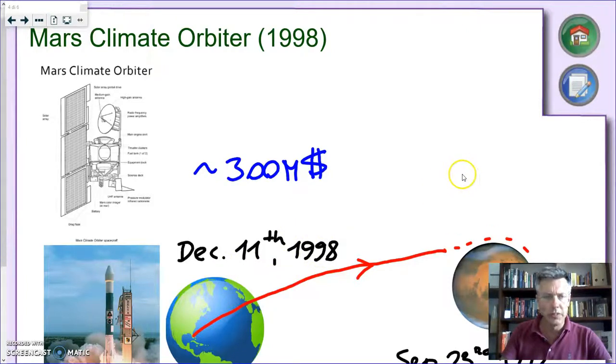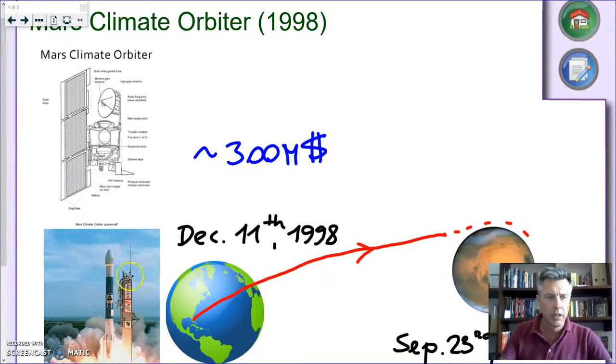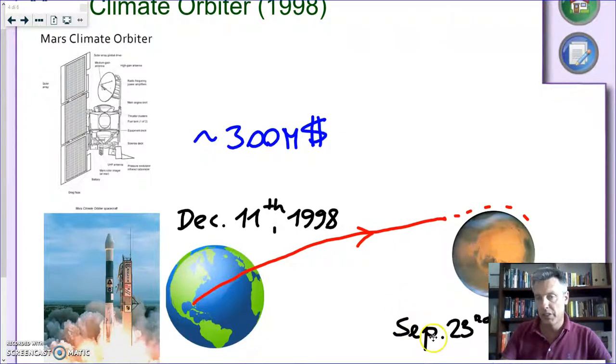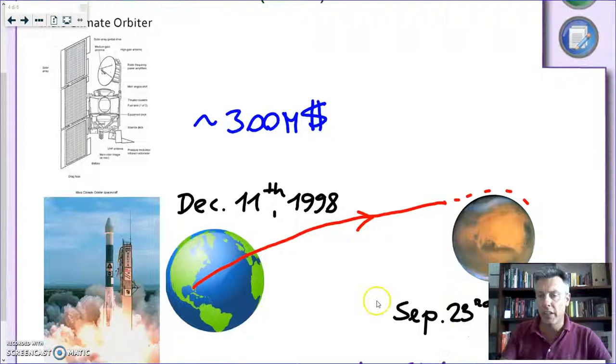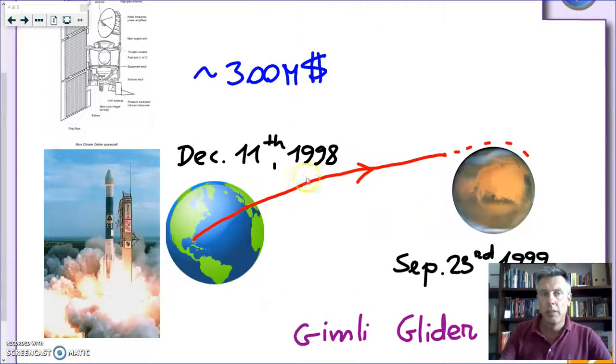Let's fast forward to December 11, 1998. The Mars Climate Orbiter was successfully launched from Cape Kennedy or Cape Canaveral in Florida. This is an actual picture of its launch with a Delta II rocket. It flew for almost a year. September 23, 1999, this is when the probe was supposed to enter Mars orbit. What happened is that the NASA control mission lost contact. And after several attempts, they finally conceded that the probe was lost.